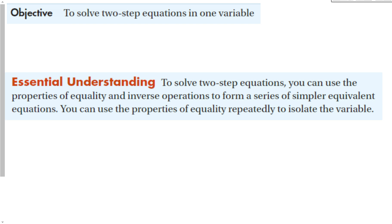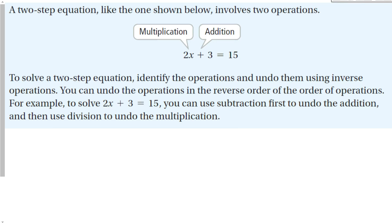What we're going to be doing now is just, instead of one operation to get the variable by itself, we're going to have two — two-step equations. Then in the next section we will have more. A two-step equation like the one shown below involves two operations: multiplication right there and addition right there.